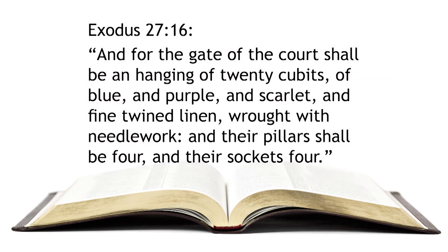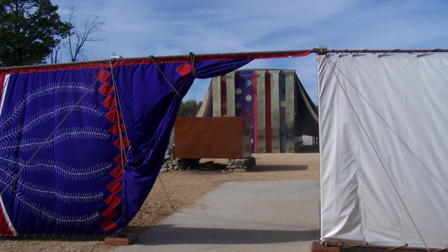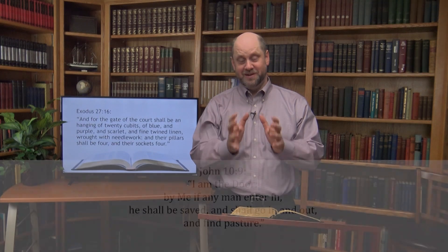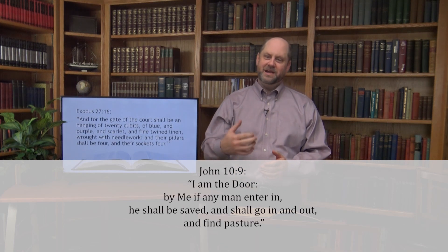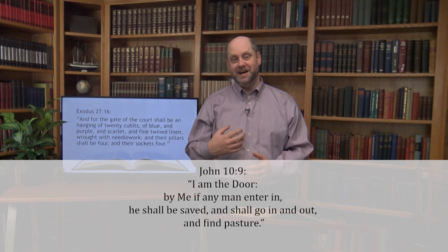Exodus 27:16 reads, 'And for the gate of the court shall be a hanging of twenty cubits of blue and purple and scarlet and fine twined linen, wrought with needlework. And their pillars shall be four, and their sockets four.' One thing that really struck me when I visited the full-size model of the tabernacle was that there was only one way to get in. As I stood at the entrance, I immediately felt the weight of that truth — there is only one way to God. The entrance into the outer court pictures Christ. Christ is the door. The Lord said in John 10:9, 'I am the door. By me, if any man enter in, he shall be saved, and shall go in and out and find pasture.'